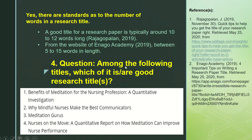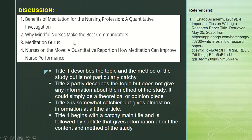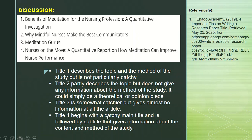Among the following titles, which is a good research title? Let us evaluate. Title 1 describes the topic and the method of the study, but is not particularly catchy. Title 2 partly describes the topic but does not give information about the method — it could simply be a theoretical opinion piece. Title 3 is somewhat catchier but gives almost no information about the article. Title 4 begins with a catchy main title followed by a subtitle that gives information about the content and method of the study. But when do we say that our research title is good?